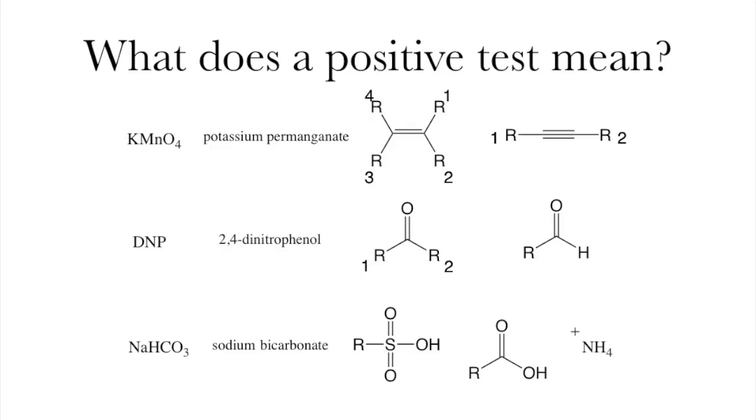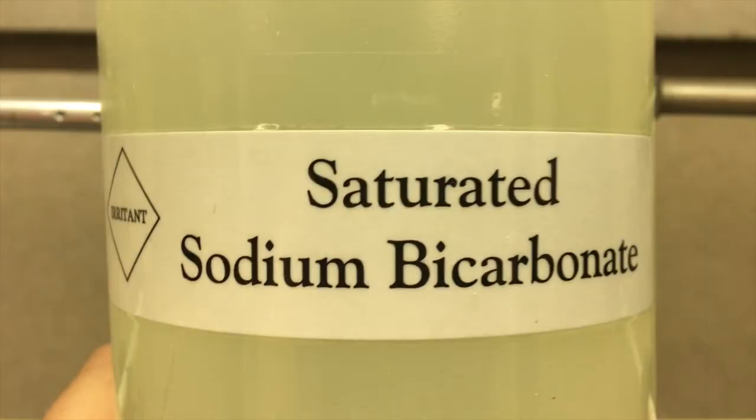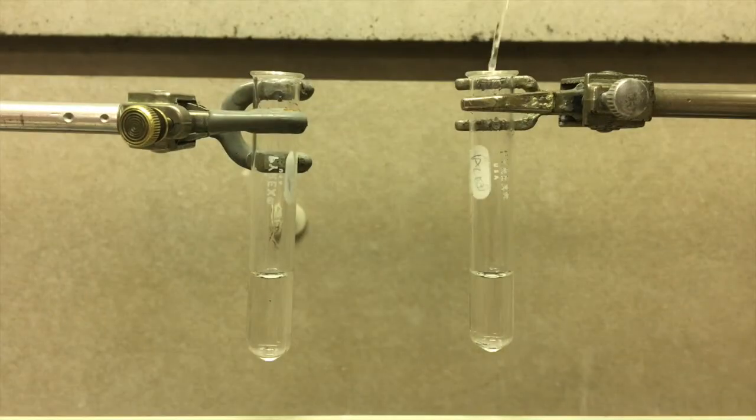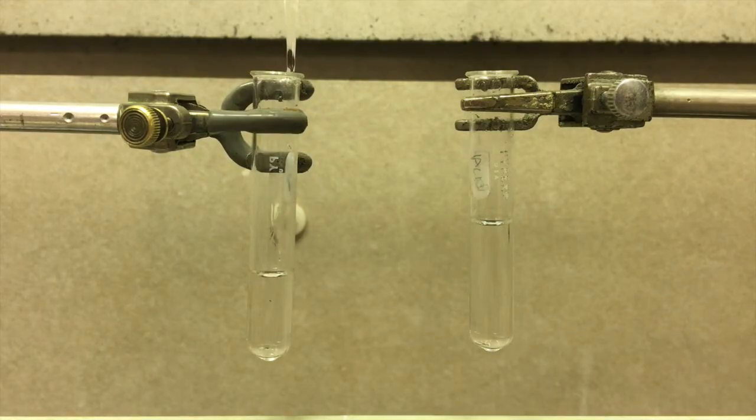And bicarbonate, which can show you sulfonics, carboxylic acids, ammoniums, and really any other acidic proton. Here once again the negative test result will be on the right. You'll see no bubbles evolve from the solution as the bicarbonate is added. Then on the left hand side you'll see the positive test result, where you see the bicarbonate reacting with the solution to give you bubbles.